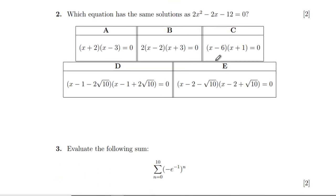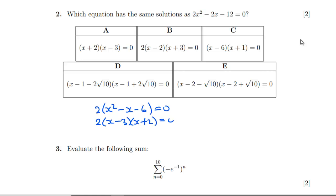Which equation has the same solutions? Let's factorize: we've got 2(x² − x − 6) = 0, which factorizes to 2(x − 3)(x + 2) = 0, giving solutions x = 3 and x = −2. That's the same as answer A — they just take the 2 off.